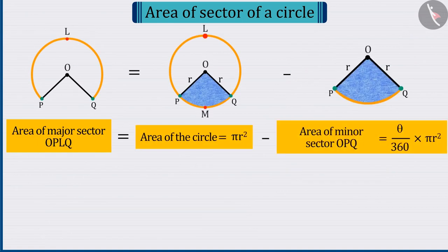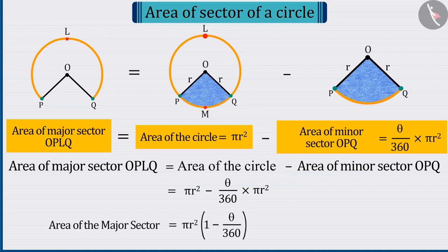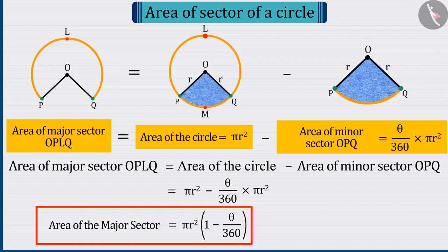Observing the figure carefully, we can tell that from the area of the circle Pi R square, subtract the area of the minor sector. Then, what we get is the area of major sector OPQ.